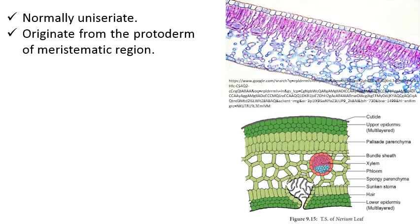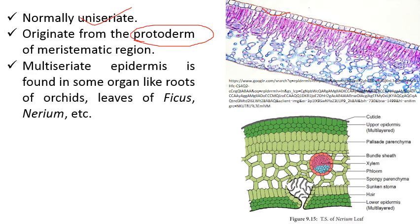The epidermis is normally uniseriate, meaning single layer in thickness. It originates from the protoderm, which is a meristematic tissue zone. In some plants, there may be multi-layered or multiseriate epidermis, found in organs like roots of orchids, leaves of Ficus elastica (commonly known as Indian rubber plant), and Nerium leaf. Nerium is a xerophytic plant growing in tough xeric conditions, so it bears multiseriate epidermis to prevent excessive water loss.